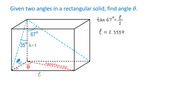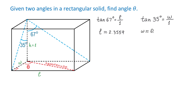In the next step, we use the left triangle to find the width. We write that tangent of 35 degrees equals the opposite side, which is the width, divided by the adjacent side, which is the height. So tangent of 35 degrees equals the width divided by 1. Using a calculator, we get that the width is approximately 0.7002.